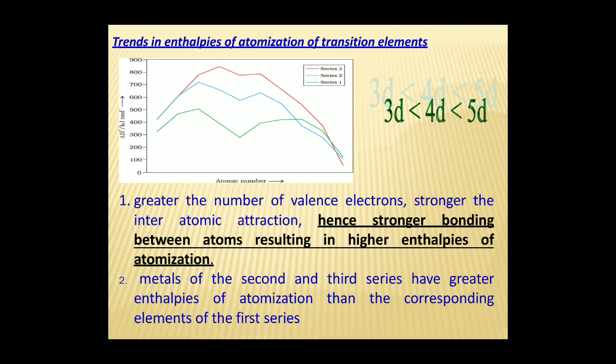Trends in Enthalpies of Atomization of Transition Elements: Transition metals have high enthalpy of atomization due to strong metallic bonding, which results from their smaller atomic size and additional covalent bonding due to d-d overlapping. The greater the number of valence electrons, the stronger the inter-atomic attraction, hence stronger bonding between atoms, resulting in higher enthalpies of atomization. Metals of the second and third series have greater enthalpies of atomization than the corresponding elements of the first series.